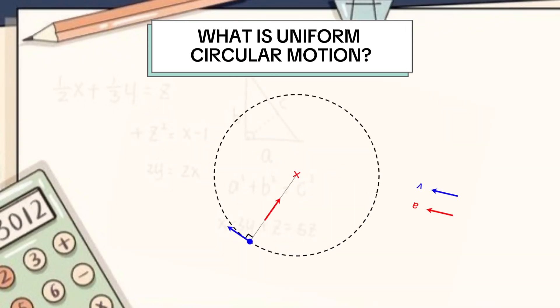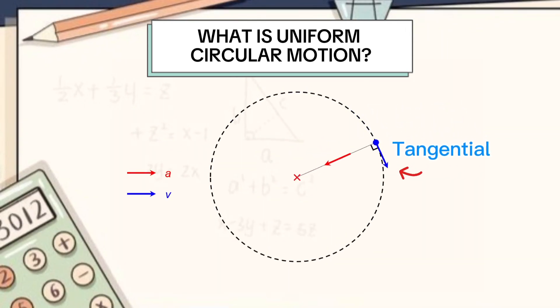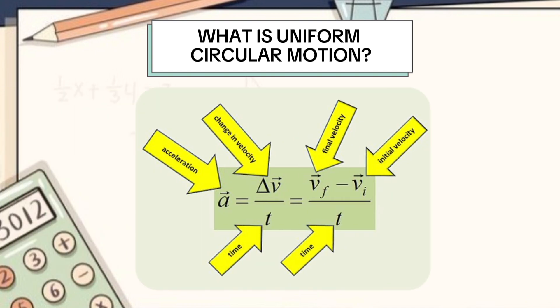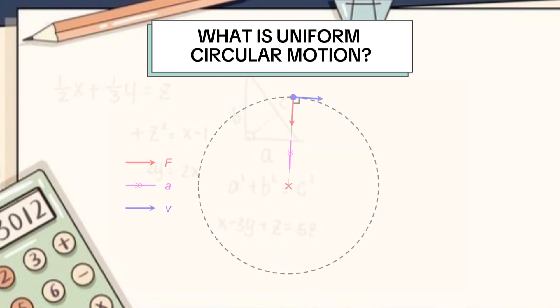Direction of velocity is tangential to the path at every point. This change in velocity is the fundamental reason for acceleration to come into picture. Presence of acceleration hints us that a force is acting on the object. This force is very popularly called centripetal force.